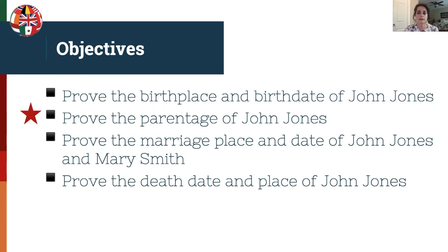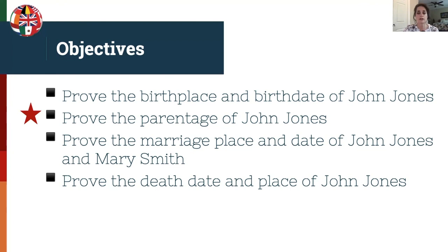A few quick comments on accreditation: for an ICAP Gen Level 1 project, the linkages between the generations are the most important. Sometimes the linkage proof is so complex that the applicant will take all the space available for a Level 1 report just to prove those linkages. But oftentimes the generational linkage may be a little less complex, so the applicant can choose to include other proofs to show off their research and writing skills. Our objectives are to prove the birthplace and birthdate of John Jones, then the must-have proof is the parentage of John Jones, then a proof covering the marriage place and date of John Jones and Mary Smith, and also the death date and death place of John Jones.